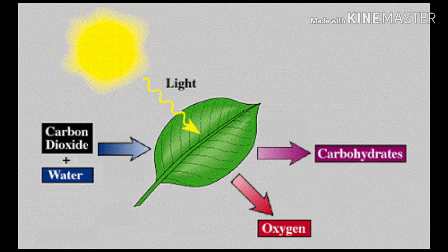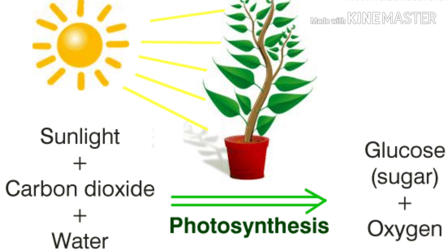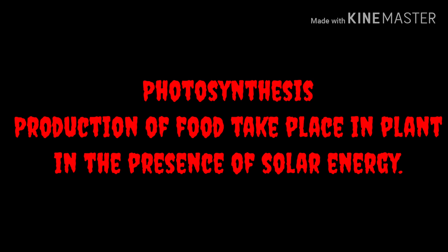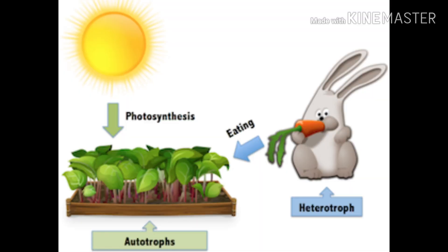Solar energy is absorbed by plants for the production of food. This process of producing food which takes place in plants is known as photosynthesis. We can separate this term into two words: photo and synthesis. Photo means light, synthesis means production. So the production of food which takes place in the presence of light is known as photosynthesis. The raw materials for photosynthesis are carbon dioxide and water. Solar energy is the energy source, making it essential for the existence of life on earth and considered as the primary source of energy.